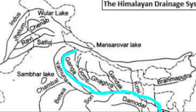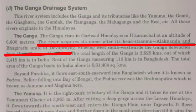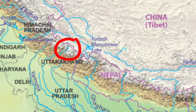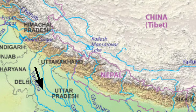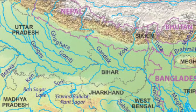River Ganga originates in the Garhwal hills of Uttarakhand at an altitude of around 6,600 meters. It acquires its name from two head streams — Alaknanda and Bhagirathi — which join at Devprayag. It originates in the Gangotri Glacier in the Garhwal Himalayas, turns towards the south, comes out from the hills at Haridwar, and enters the plains of Uttar Pradesh.